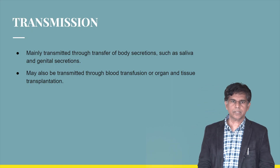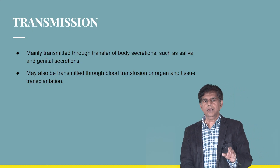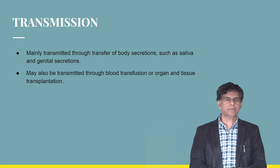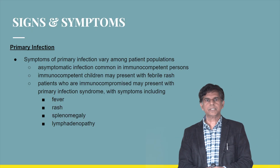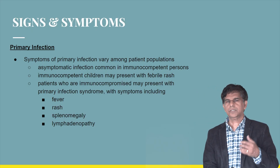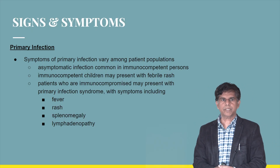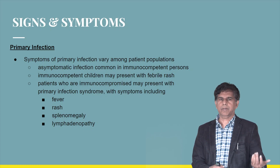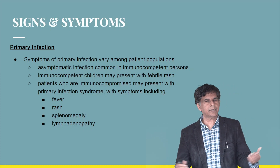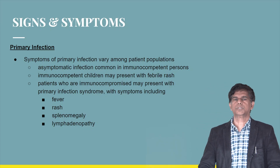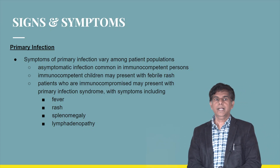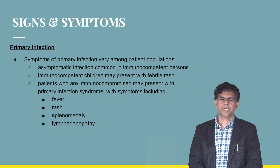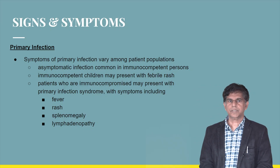Transmission is mainly through transfer of body secretions — just like other herpesviruses — including saliva and genital secretions. Organ transplant and blood transfusion are also important routes. Regarding signs and symptoms of primary infection: in immunocompetent persons, it is usually asymptomatic. In immunocompromised patients, it presents with fever, rash, splenomegaly, and lymphadenopathy.